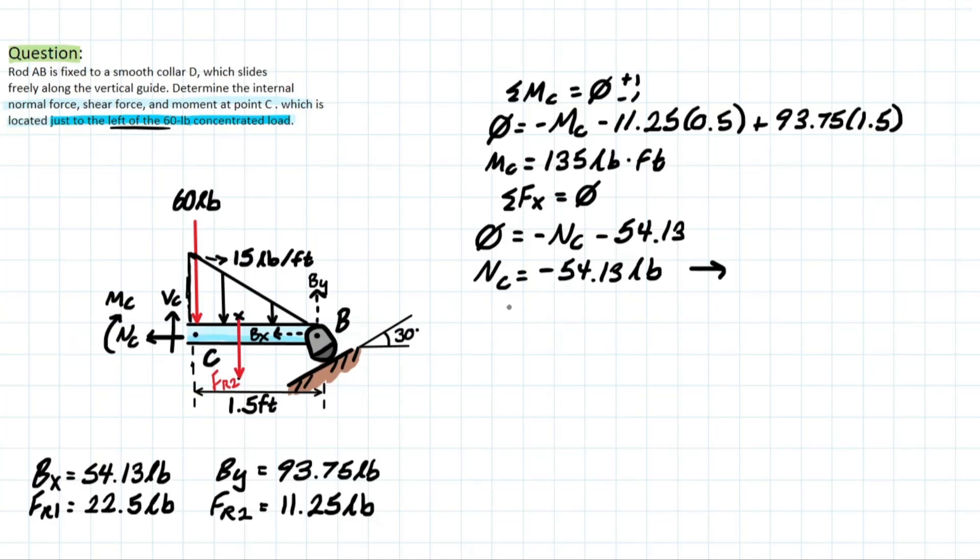Lastly, we solve for that shear force here by taking the summation of forces at Y equal to 0. And based on the convention, we have shear force positive. And then we have all these other forces acting. The 60 pound force is going to play a role, which is kind of the trick to this whole sentence right here. It's just adding that 60 to this FY calculation here. We also have the FR2, which we calculated before. Once again, 11.25 pounds. And then the BY once again, which is 93.75 pounds. Solving for shear force at C, it is going to be negative 22.5 pounds, meaning that it's going to look something like this rather than the way the convention drew it. So these are your final answers. Thank you.